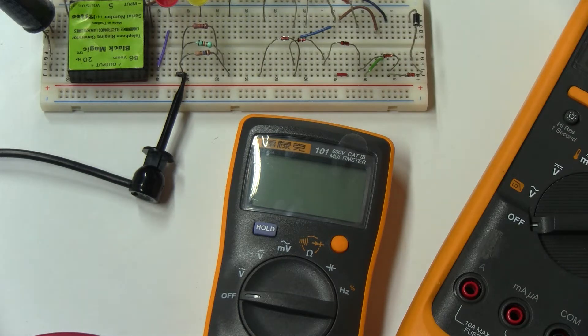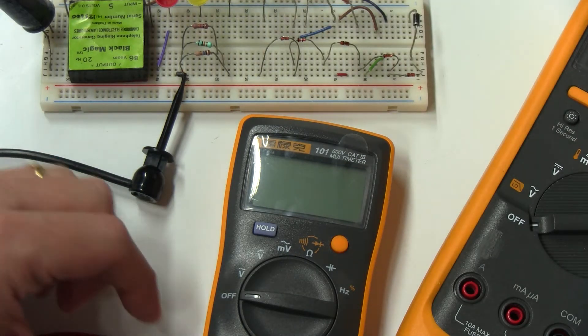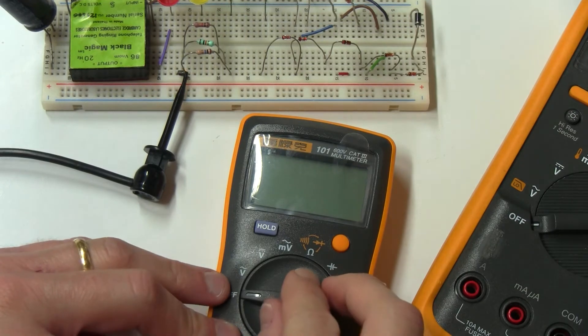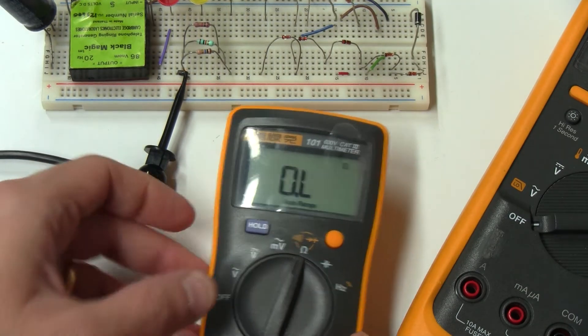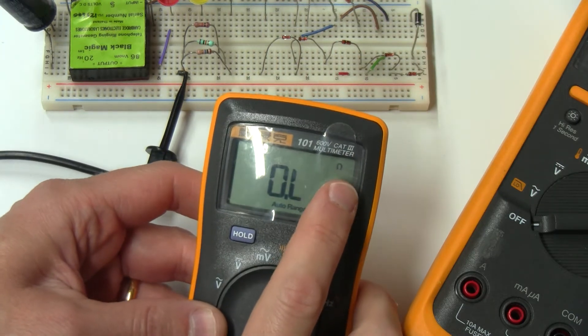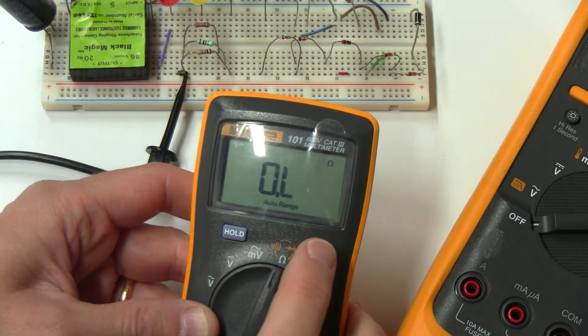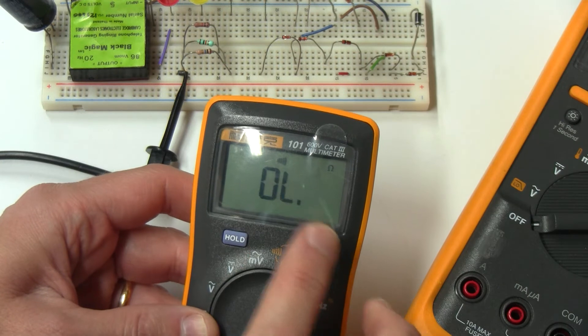Hi, this is just a follow-up to my previous video where I'm showing that the multiplier for the ohms range is not working well. This is the ohms range, and if you press the yellow button it goes to continuity mode.